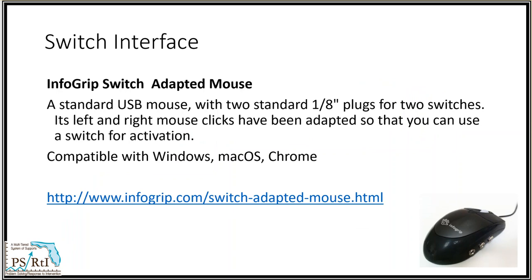The InfoGrip Adaptive Mouse is a simple switch interface which emulates a left and a right click. Many early learning switch programs use this option. As you can see in the picture, you plug your switches into the right side of the mouse. The device works with Windows, Mac, and Chrome computers. A nice feature is that it works like a standard mouse, making it an easy accommodation to add to a classroom computer shared with other students.